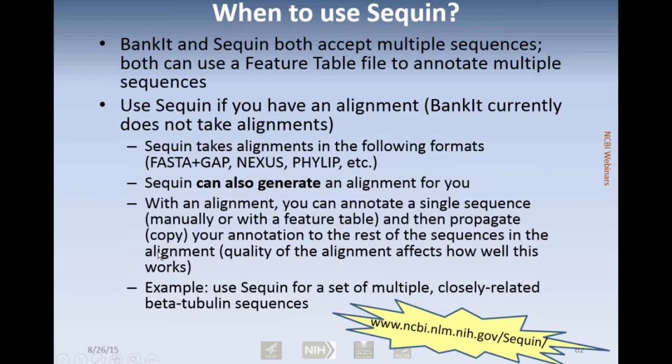When you do have an alignment, one of the features in Sequin is that you can annotate a single sequence and then copy that annotation to the rest of the sequences in your dataset. But the quality of the alignment affects how well that works. Sometimes you need to do some manual adjustment. But if you have multiple closely related sequences that are high quality, you may want to use Sequin. More information about Sequin is available from the URL listed.